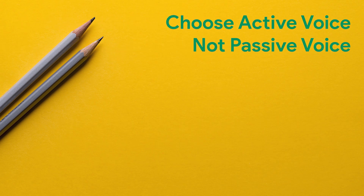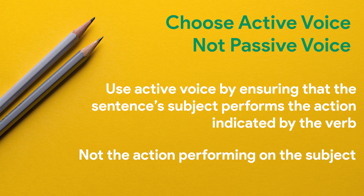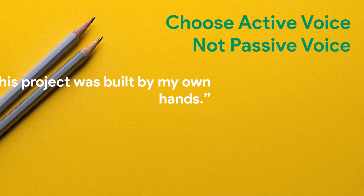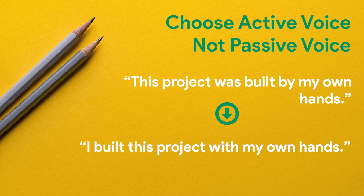Strategy three: Choose active voice, not passive voice. This key grammar rule can make the difference between a good writer and a great writer. Use active voice by ensuring that the sentence's subject performs the action indicated by the verb, rather than the action performing on the subject. For example, instead of writing 'this project was built by my own hands,' you would say 'I built this project with my own hands.' By using active voice, the sentence is more concise, easier to follow, and adds more impact to your writing.